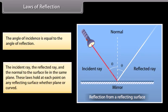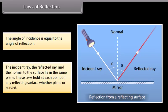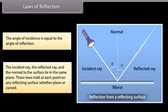The incident ray, the reflected ray, and the normal to the surface lie in the same plane. These laws hold at each point on any reflecting surface, whether plane or curved.